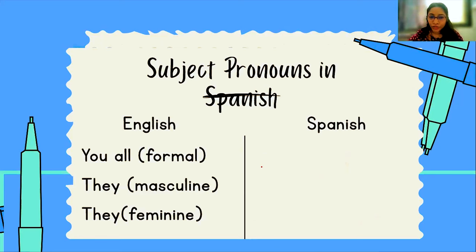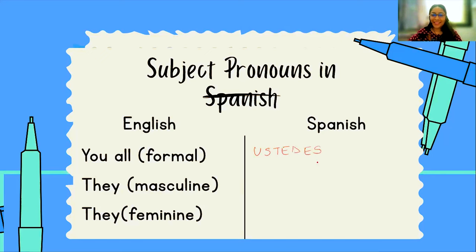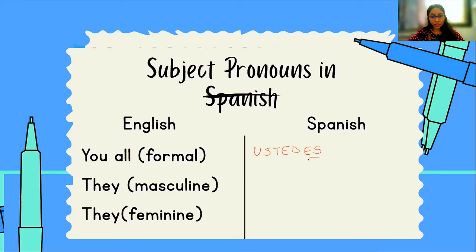Let's look at 'you all' — formal. If you remember, 'usted' is formal singular 'you.' Let's make it plural: 'ustedes' — we've just added two letters at the end. Use 'ustedes' when talking to many people who are elderly, hold a title — teachers, principals, dean — or people you are meeting for the first time. And in Latin America, instead of 'vosotros' and 'vosotras,' 'ustedes' is commonly used.